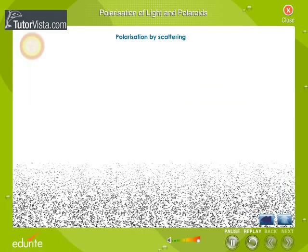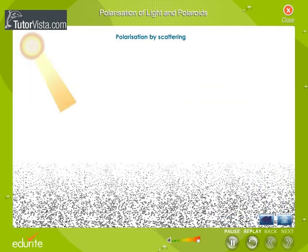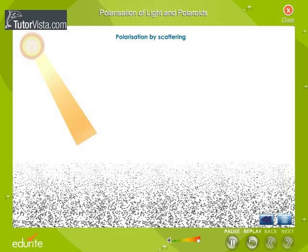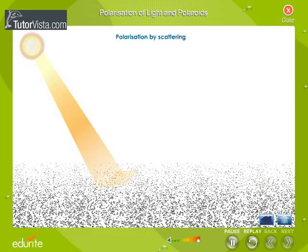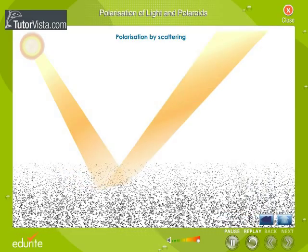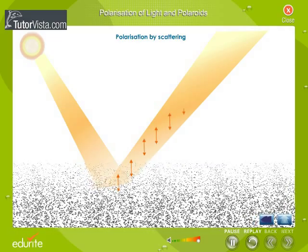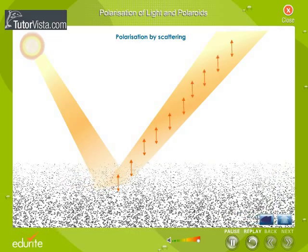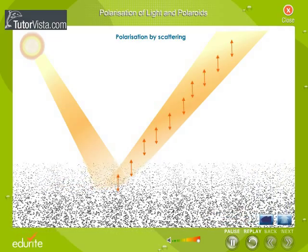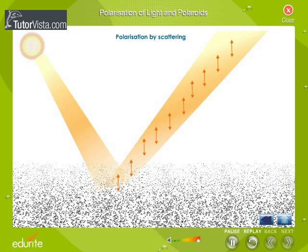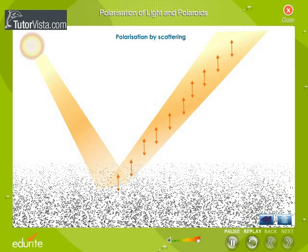Polarization by scattering. When sunlight is incident on the gas molecules in the atmosphere, it gets scattered. The scattered light, seen in a direction perpendicular to the direction of incidence, gets polarized. This phenomenon is called polarization by scattering.